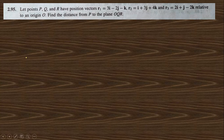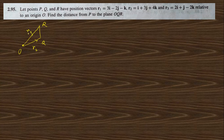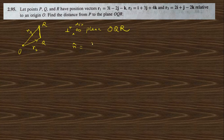Next: let P, Q, R have position vectors r1, r2, r3 relative to the origin. Find the distance from P to the plane OQR. The plane OQR contains vectors OQ (which is r2) and OR (which is r3). The perpendicular direction to plane OQR is the unit normal n-cap, written as (r2 cross r3) divided by |r2 cross r3|.